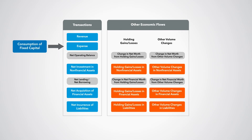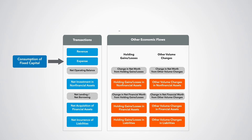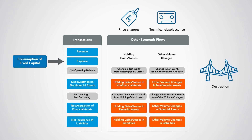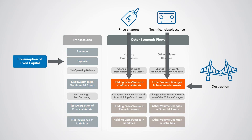Other events that also affect the value of fixed assets in the balance sheet, such as general price changes, technical obsolescence, and destruction by exceptional events, are not transactions and are recorded as other economic flows.